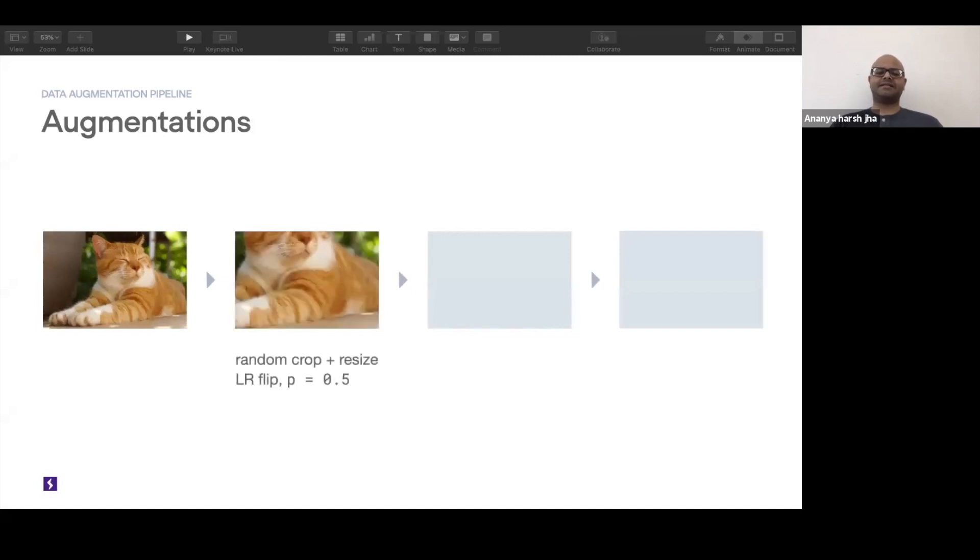The first step is just a random crop with resize. This is a pretty standard augmentation you use in standard image net training. After you do a random crop with resize, you do a left right flip with a 0.5 probability. So after you have this first step in the set of augmentations,